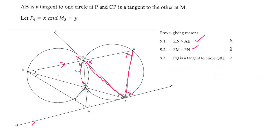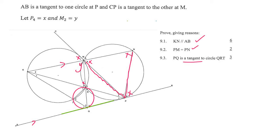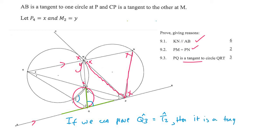For question 9.3 they want us to prove that PQ is a tangent to circle QRT. So we need to draw circle QRT — it would look something like that. Whenever they ask you to prove something is a tangent, use the converse tan-chord theorem. If we look at line PQ and chord RQ, and we pretend PQ is a tangent, then from the tan-chord theorem this angle would have to equal T2. So our goal is to prove that Q3 equals T2.